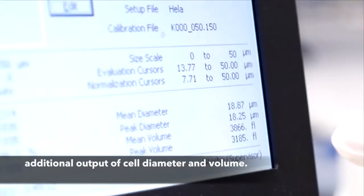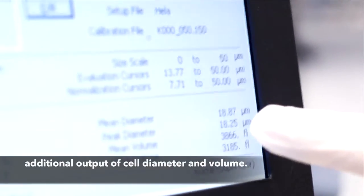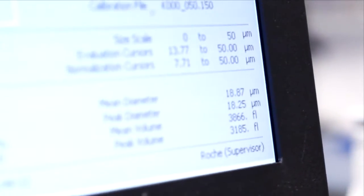In addition, we also obtain the diameter and volume results for the cells. Here, the typical mean diameter for the HeLa cell is 18.87 microns.